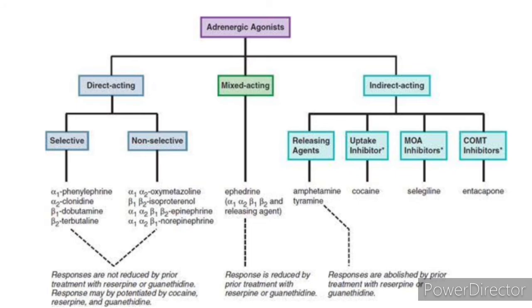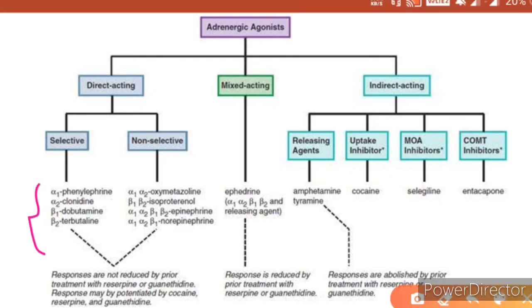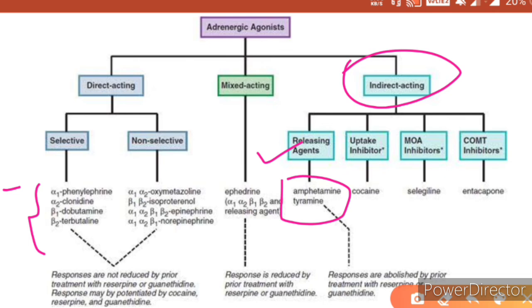Among directly acting drugs, selectively acting on alpha-1 receptors we have phenylephrine; on alpha-2 receptors we have clonidine, which acts exclusively on alpha-2. Dobutamine acts on beta-1 receptors. Dobutamine acts on beta-2 receptors. Non-selective drugs include oxymetazoline, isoproterenol, epinephrine, and norepinephrine — they can act on any receptors. For indirectly acting drugs, releasing agents include amphetamine and tyramine.